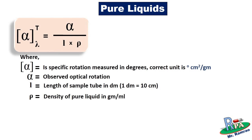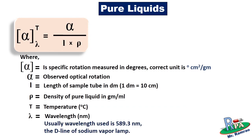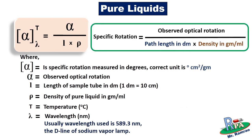Rho is the density of the pure liquid in grams per mL. T is the temperature in degrees Celsius at which the experiment is carried out. Lambda is the wavelength in nanometers — usually the wavelength used is 589.3 nanometers, that is the D line of the sodium vapor lamp. So the formula can be read as: specific rotation equals observed optical rotation divided by path length in decimeters multiplied by density in grams per mL.